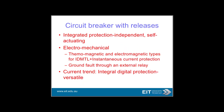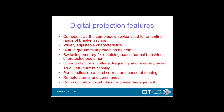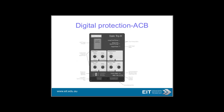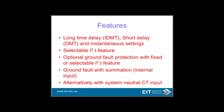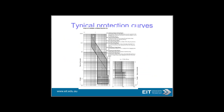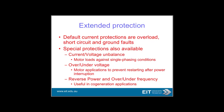Circuit breakers and protective devices are covered in great detail in these slides. Circuit breakers with releases are one of the main categories. Typical device highlights include built-in current sensors, digital protection features, compact size, and widely adjustable characteristics. Obviously digital is the way to go — you also get annunciation, remote communications, and true RMS current sensing. Digital protection features include long-time delay, short delay, and instantaneous settings — pretty flexible, with comprehensive protection curves.